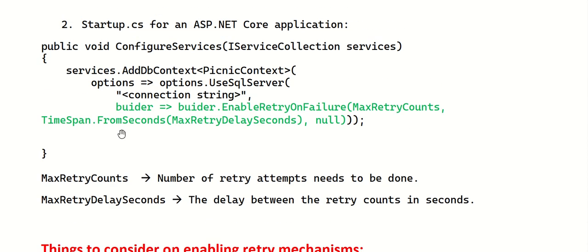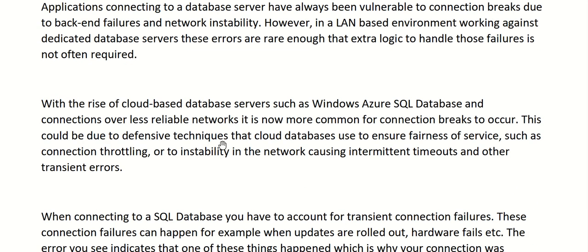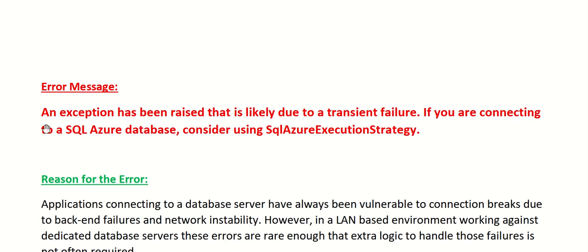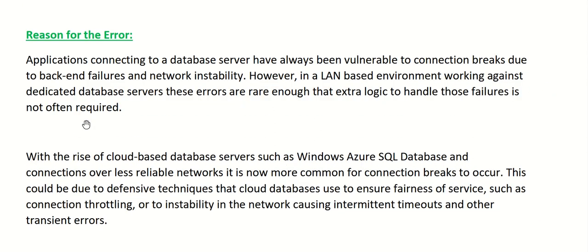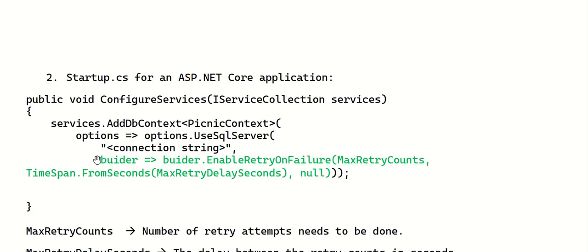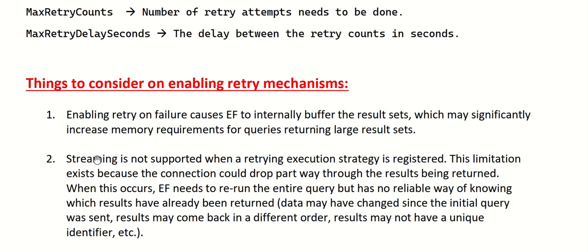Once this is implemented, you typically won't see this error anymore. Whenever a transient failure happens on your connection, Entity Framework will automatically retry to establish the connection and re-run the commands that failed, effectively eliminating the transient failure error.